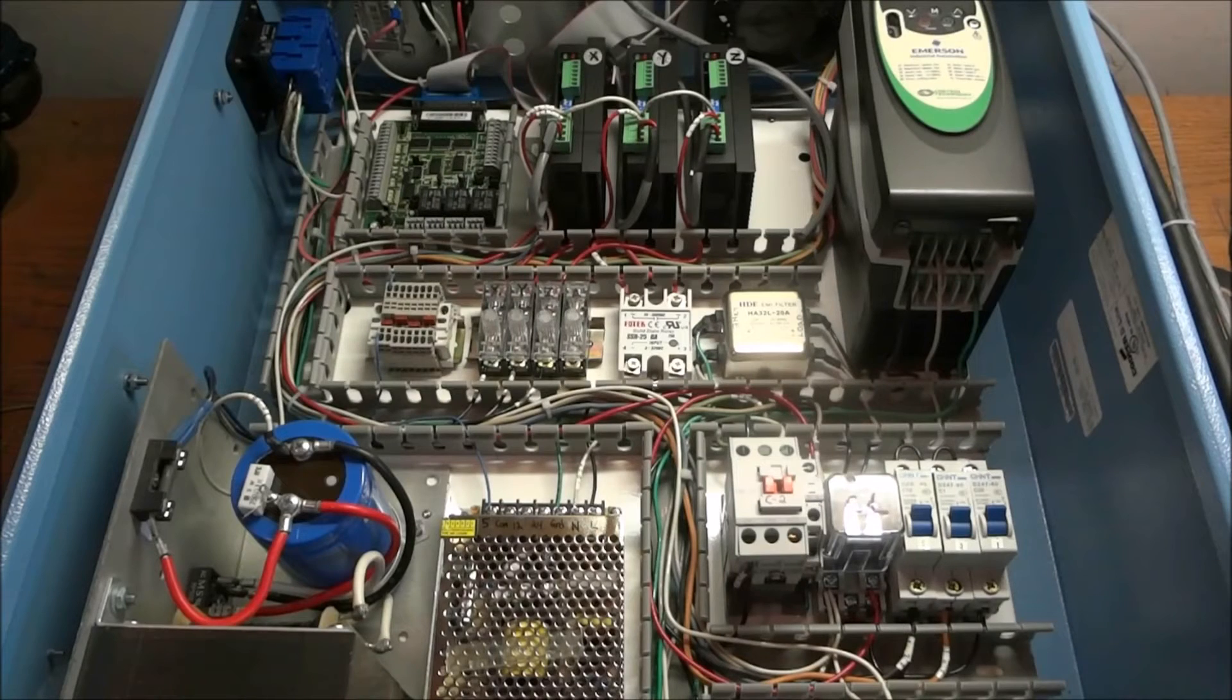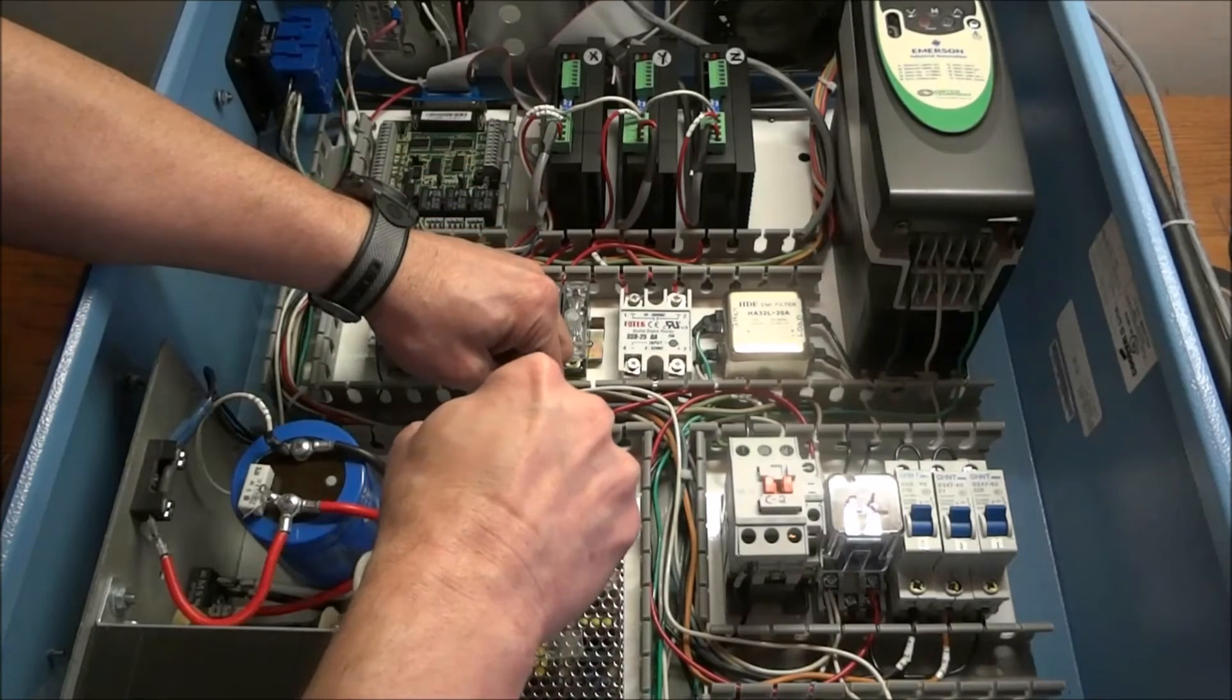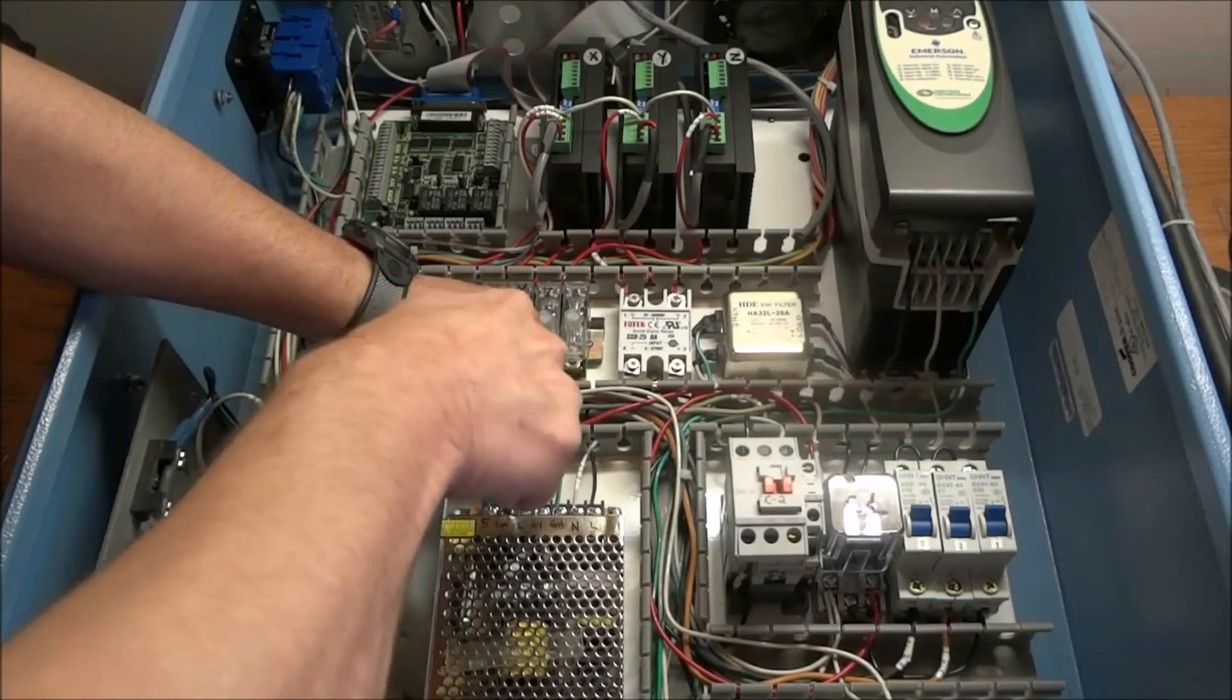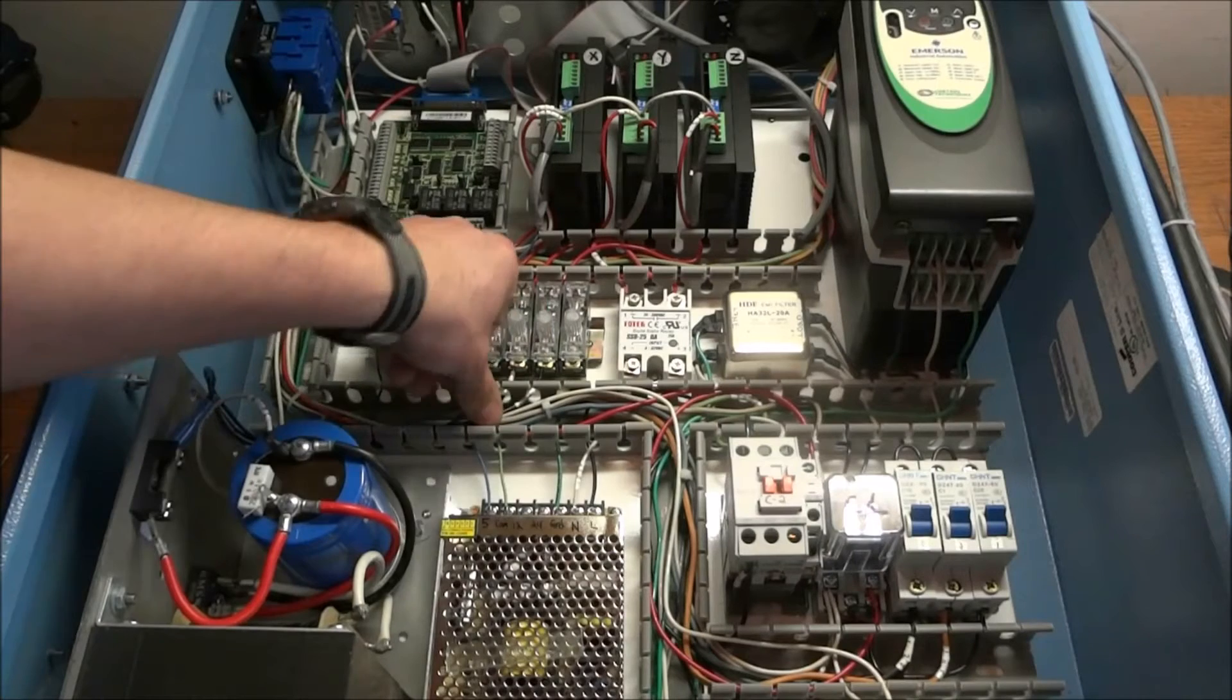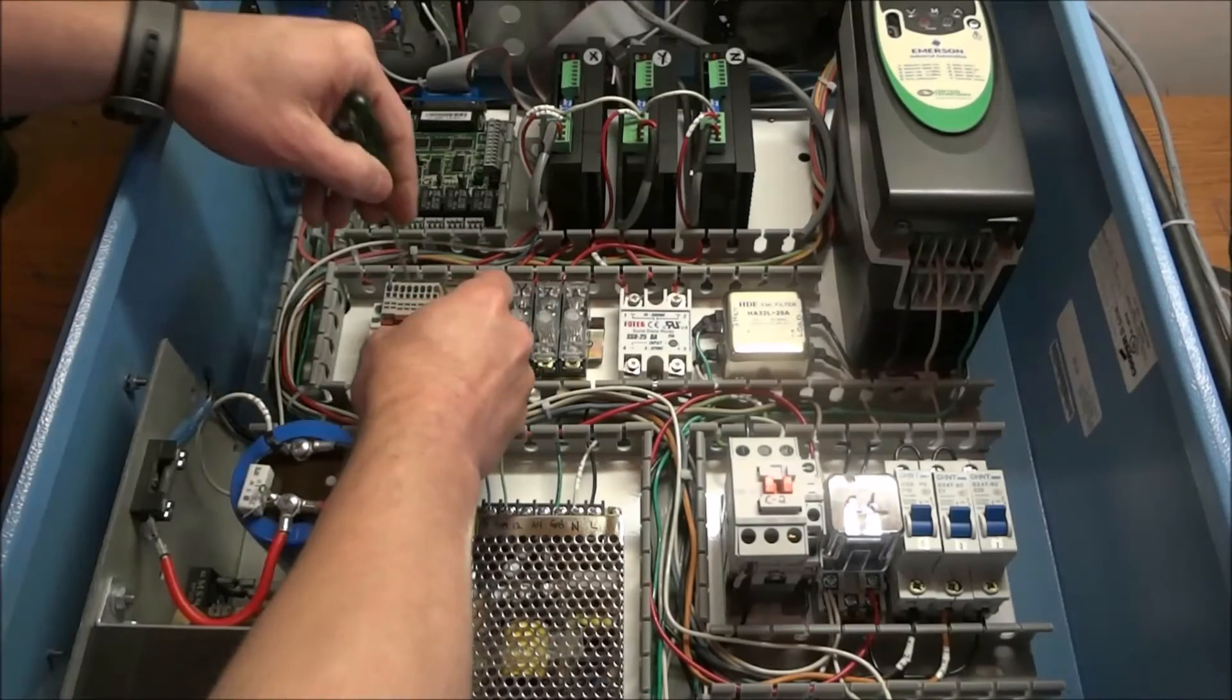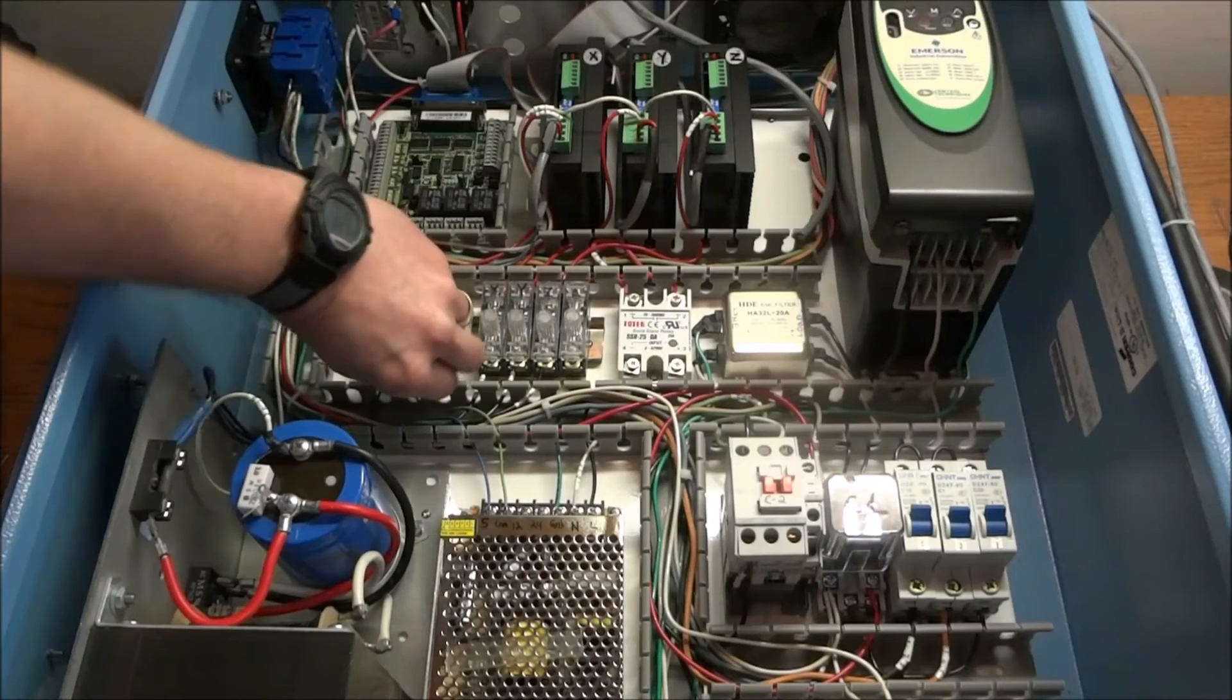Next we want to run our common. And that's our second terminal here. Try not to get confused between the common on the TriPower and the 110 volt ground. Going to run it to the end here. Now I have my common connected.